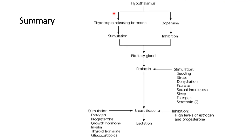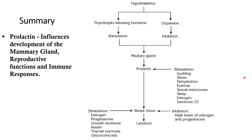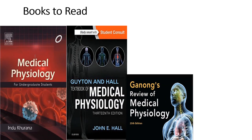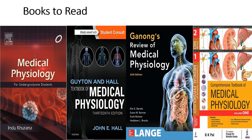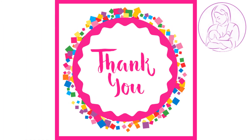In summary: the hypothalamus releases thyrotropin releasing hormone or prolactin releasing factor to stimulate the pituitary gland to release prolactin. If there is no inhibitory factor like dopamine released from the hypothalamus, prolactin gets released and mainly acts on the breast to cause milk production. Prolactin also influences the development of the breast and has reproductive functions and immune responses. Recommended textbooks include Hindukurana, Guyton and Hall, Ganong, and Mckop.